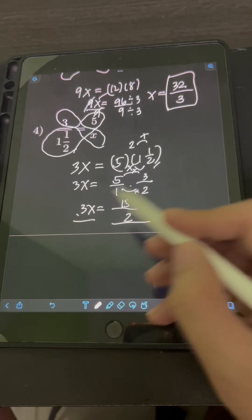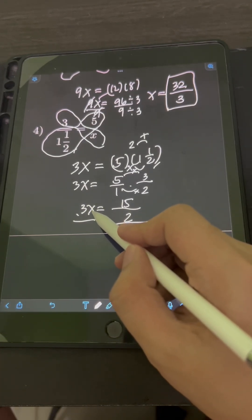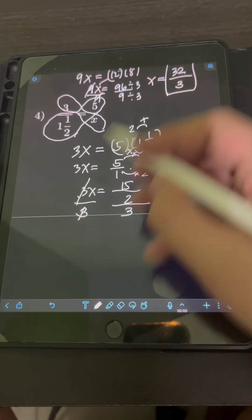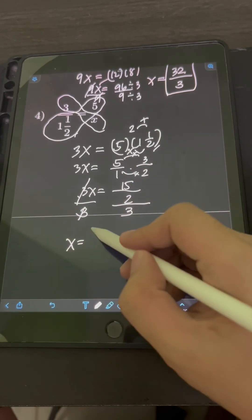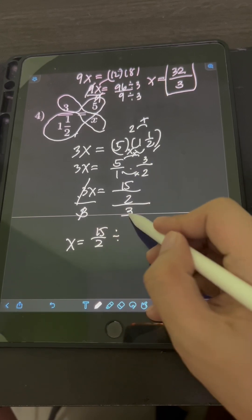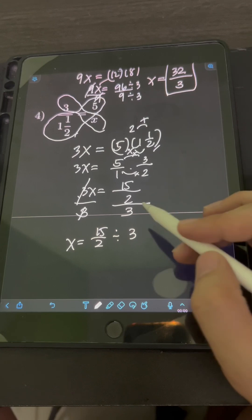we divide both sides of the equation by the constant beside x, which is 3. So that we can cancel the 3. x is equal to 15 over 2 divided by 3. So how do we divide fraction?